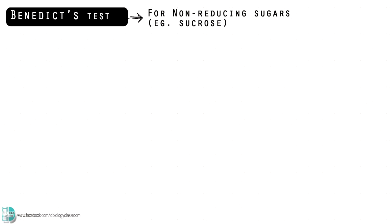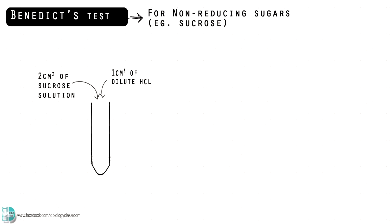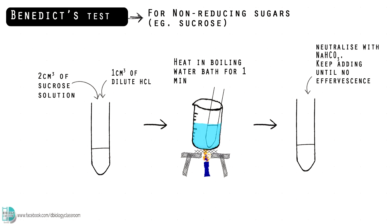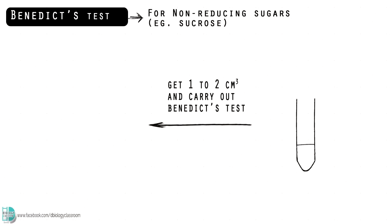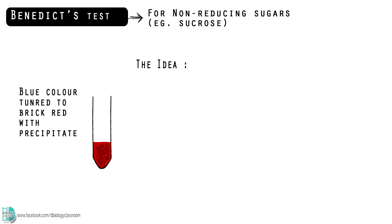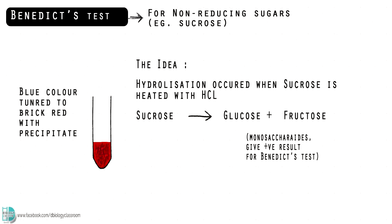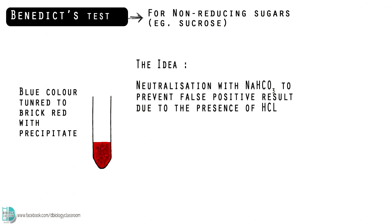A few extra steps are required if you want to test the presence of a non-reducing sugar such as sucrose. First, add 2 cm³ of sucrose solution into a test tube, then add 1 cm³ of dilute hydrochloric acid. Boil the solution for 1 minute. After that, neutralize the mixture with sodium hydrogen carbonate — keep adding until no effervescence can be observed. Get 1 to 2 cm³ of the resulting solution and carry out Benedict's test. The idea is that when you heat the sucrose solution with an acid, it is hydrolyzed into glucose and fructose, giving a positive result. Neutralization with sodium hydrogen carbonate is required to remove a possible false positive result due to the presence of hydrochloric acid.